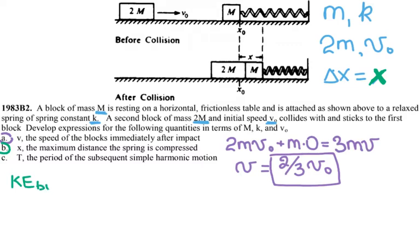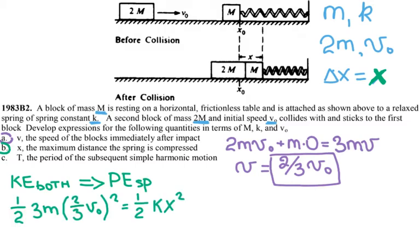So kinetic energy of both after the collision: I have one-half their mass 3M and their velocity together that we just found out, two-thirds v₀ squared, equals one-half k x squared. I can cancel one-half from both sides. After I simplify the left side I have 3M times four over nine.